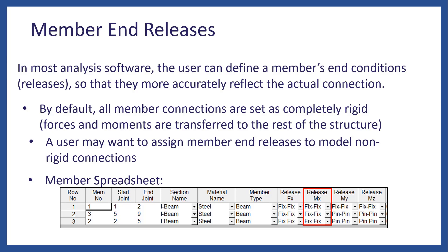MX is the x-axis rotation release, which is about the end of your member, with respect to the element coordinate system. Basically, this allows rotation about the member's own axis in case it is not fixed. MY and MZ are the Y and Z axis rotation releases about the ends of the member. You may also notice a drop-down menu on each of these columns, all of them giving four options for the I and J nodes of your member.